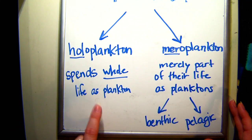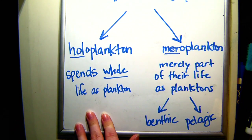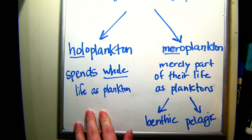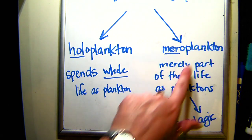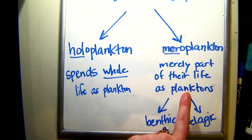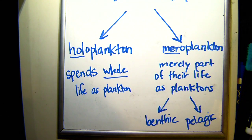Remember, holoplankton spend their whole life as plankton. There are many other examples — krill and brine shrimp would be examples of holoplankton that spend their life in that small, unable-to-swim-against-the-current life stage. Meroplankton is different — they spend only part of their life as plankton.